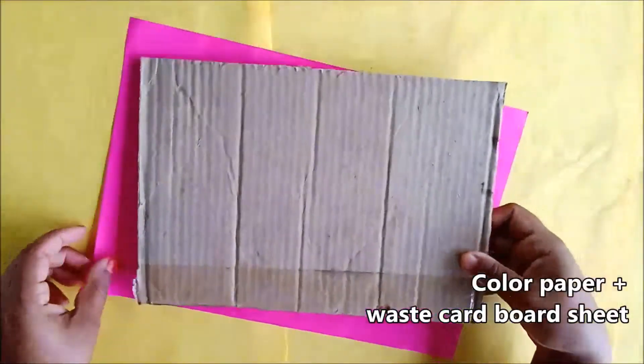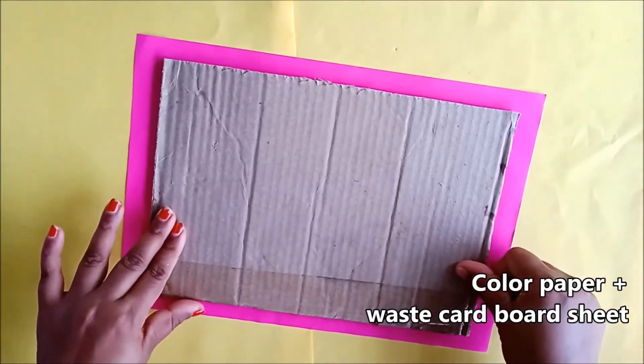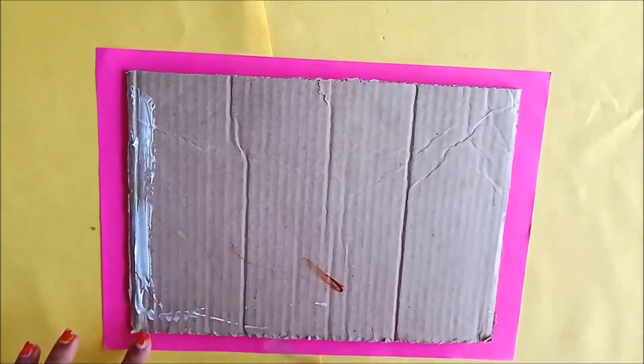A beautiful flower is ready here. Now I am going to make the frame. Take a cardboard piece and color a full sheet and cover it neatly.